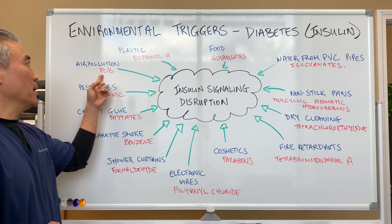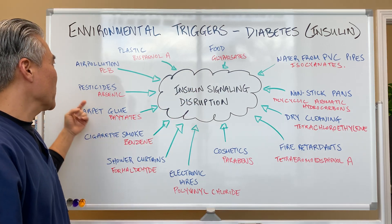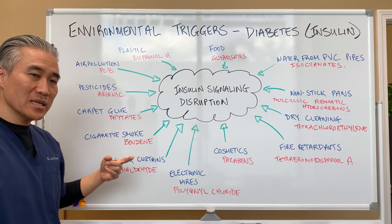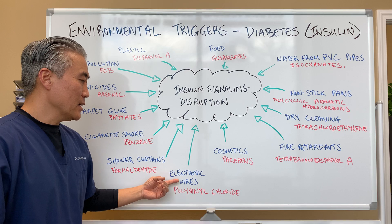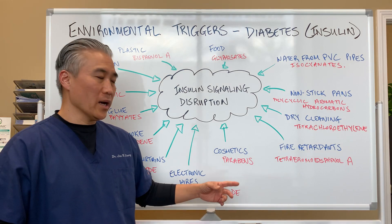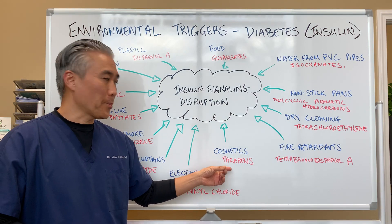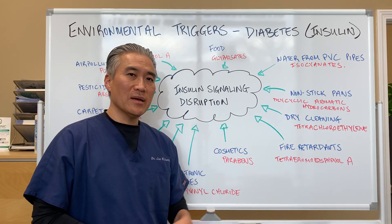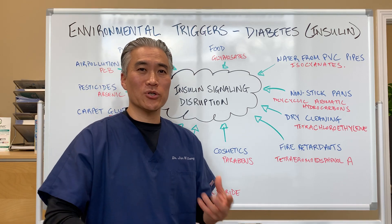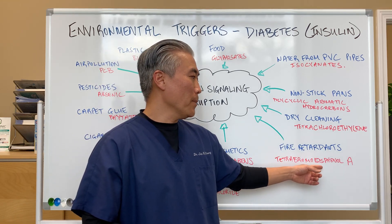When we look at air pollution, we're looking at PCBs. Plastics contain bisphenol A, or BPA. Pesticides can contain arsenic. Phthalates come from carpet glue, benzene from smoke, formaldehyde from electrical wires. People don't realize that electrical wires contain polyvinyl chloride, which can be an endocrine disruptor. Cosmetics have a lot of parabens in them. Fire retardants are used on mattresses and furniture, coated with tetrabromobisphenol A.